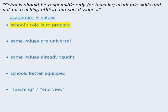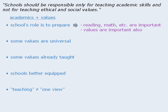Let's begin with the point about the school's role to prepare students for adult life. We might give some examples by explaining that schools prepare students for adult life by teaching them how to read, write, and perform other skills necessary to function in society. Since ethical and social values play an important role in one's adult life, schools should teach these as well.